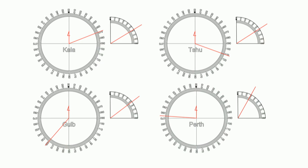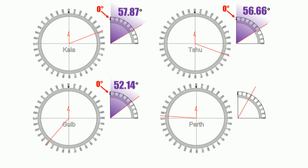Sun altitude is measured from the horizon. Top left should be 57.87 degrees, top right should be 56.66 degrees, bottom left should be 52.14 degrees, bottom right should be 28.66 degrees. Now every single one of these compasses that you have made, Slice Sparkane, is wrong.